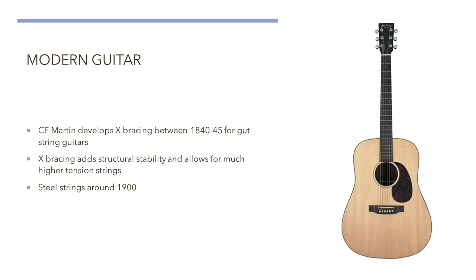The next step in the evolution of the modern guitar occurs roughly in 1840. C.F. Martin develops what is known as X-bracing during this period for use on gut-stringed guitars. X-bracing was developed to increase the structural integrity of the instrument. This structural integrity would be key in that within 50 years we would see steel strings on the guitar. There is no way that a guitar without this type of bracing would have been able to sustain the tension required for steel strings.